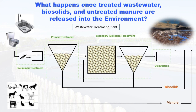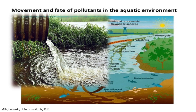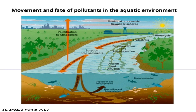I gave you an overview of what happens once you have treated wastewater or untreated manure released into the environment. I wanted to briefly talk about aquatic environments — that's an environment that's been heavily studied with regard to antibiotics and antibiotic resistance. Typically you're looking at wastewater treatment plant release, but you could also have surface runoff from urban and agricultural settings.